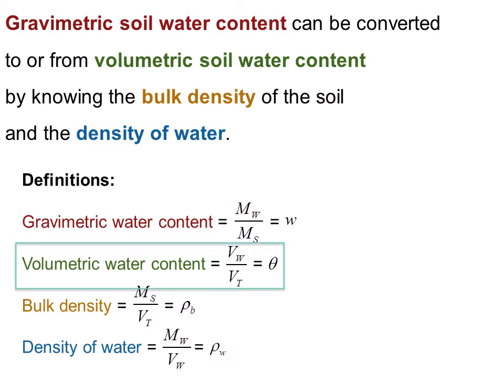Volumetric water content is the ratio of the volume of water in soil to the total volume of soil, and that is denoted by the Greek letter theta.